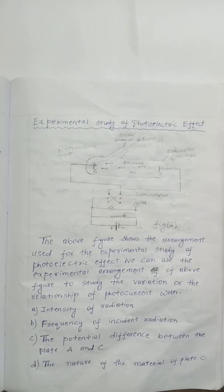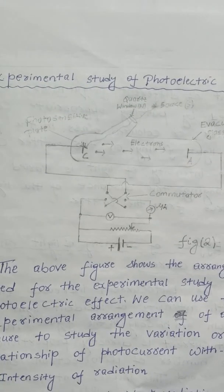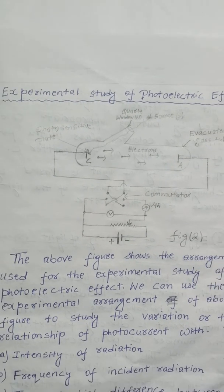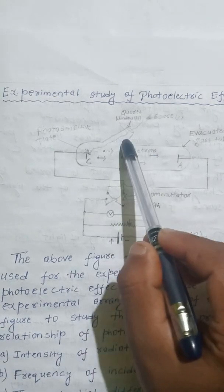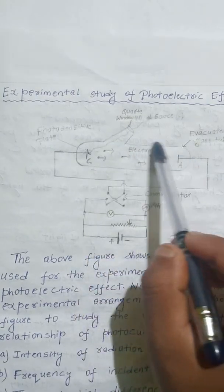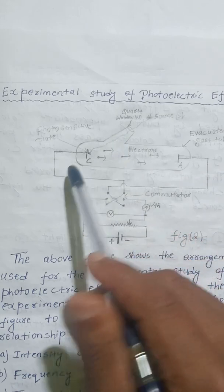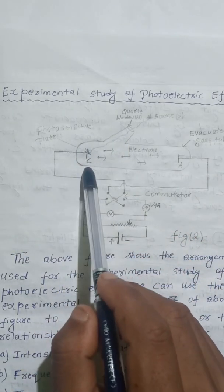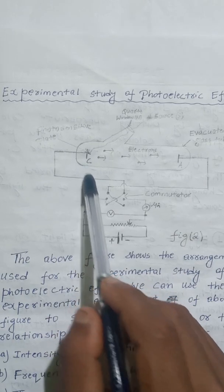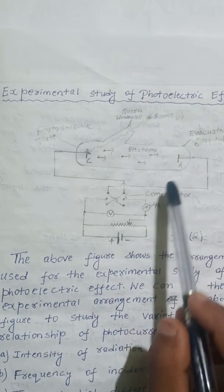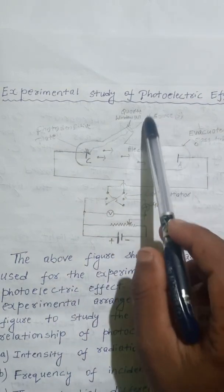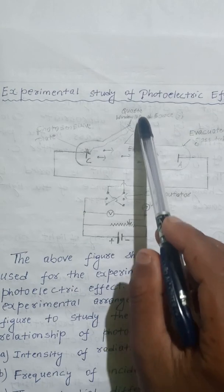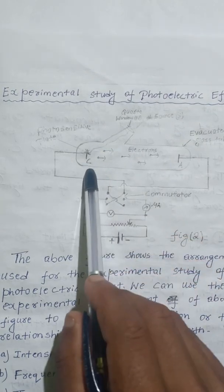Experimental study of the photoelectric effect. The diagram shows the arrangement used for the experimental study of the photoelectric effect. It consists of an evacuated glass tube having a photosensitive plate C and another plate A. Light from the source S passes through the window W and falls on the photosensitive plate C.